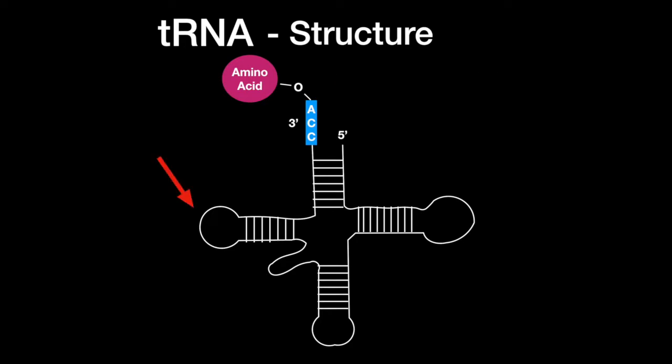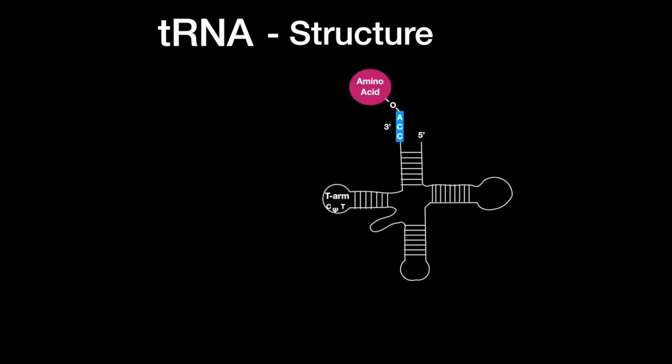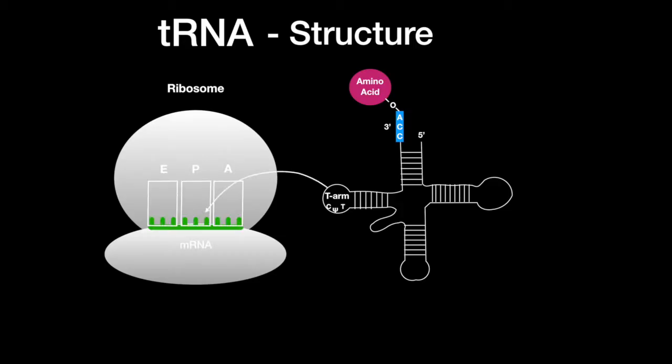This left side of the tRNA is the T arm. It contains the T-psi-c sequence that is necessary to bind to the ribosome during translation. The T arm tethers the tRNA to the ribosome.